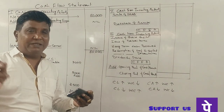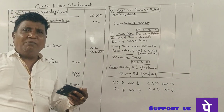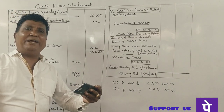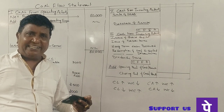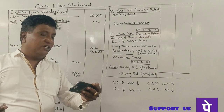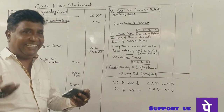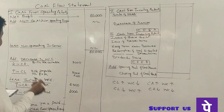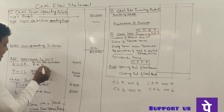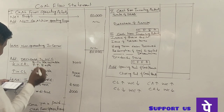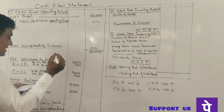Prepaid expenses: this is a current asset. Prepaid expenses were 900 in the previous year and 800 in the current year — a decrease of 100 rupees. When current asset decreases, working capital decreases. Decrease in working capital means addition to cash from operations. Prepaid expenses decreased by 100 rupees.